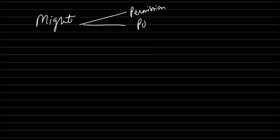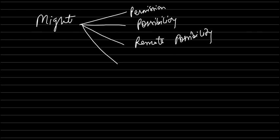First this permission, possibility, remote possibility, request, command, casual command and suggestion. Then all these things, might expresses. Okay there are one, two, three, four, five things.